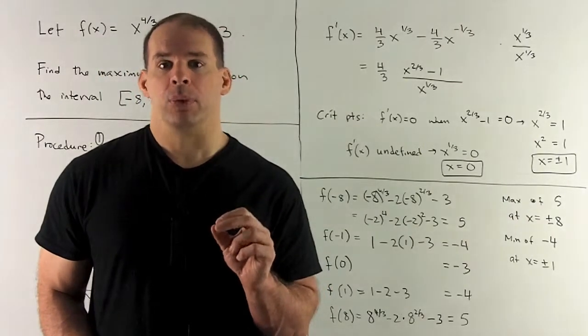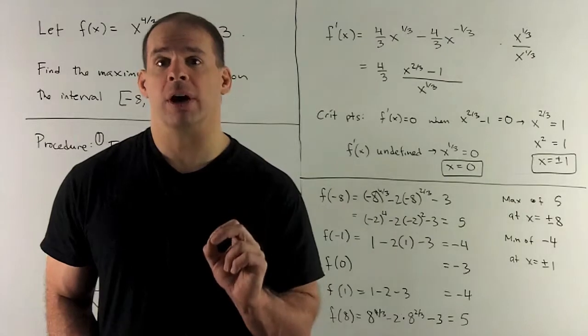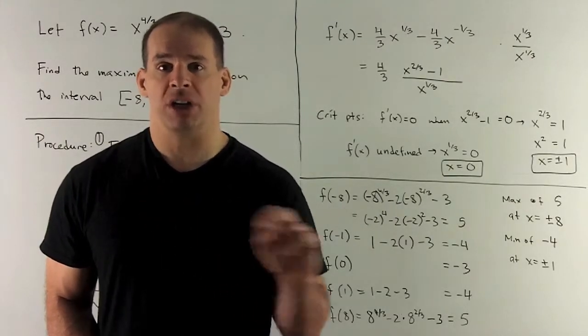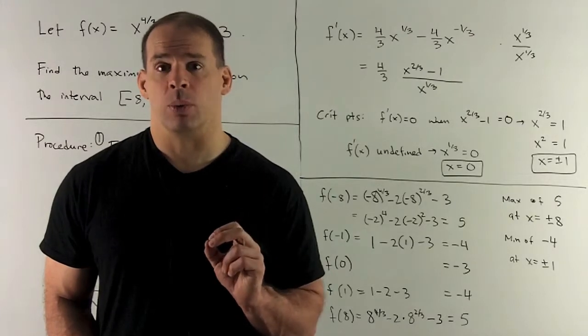Now, before I can work with that, we should clean things up a little bit. I don't like the x^(-1/3). So we'll just pretend our function is over 1, then multiply top and bottom by x^(1/3).